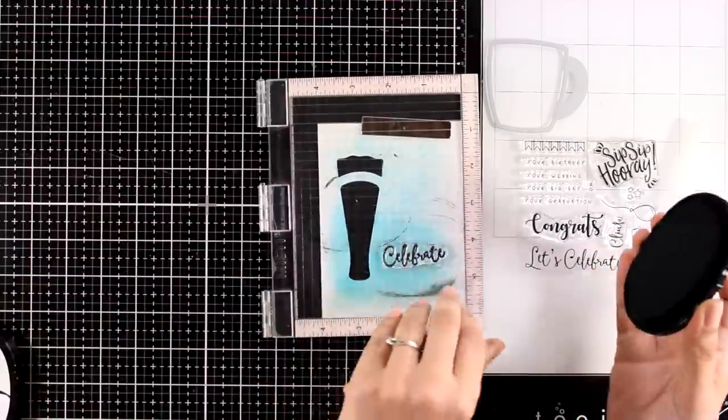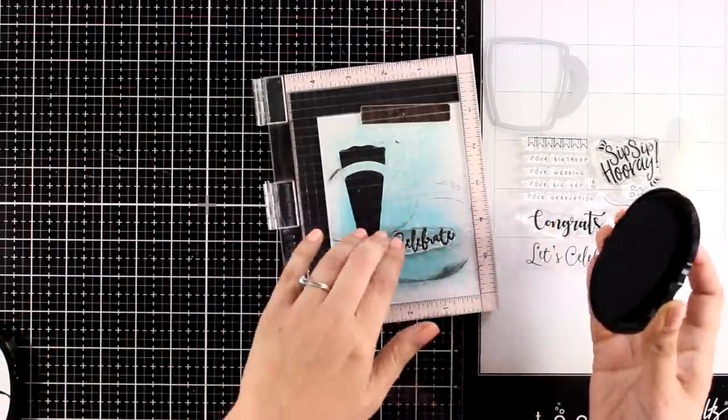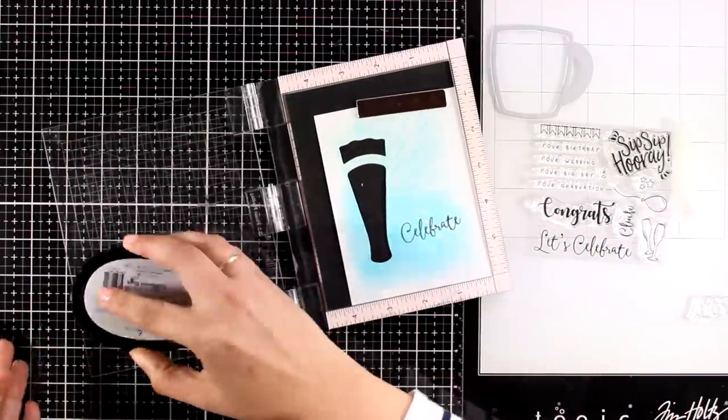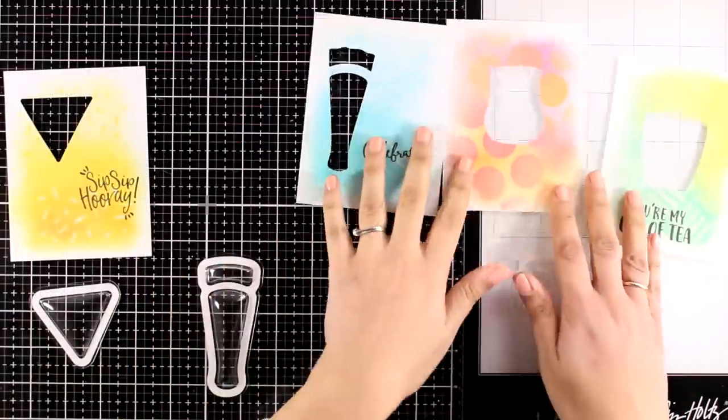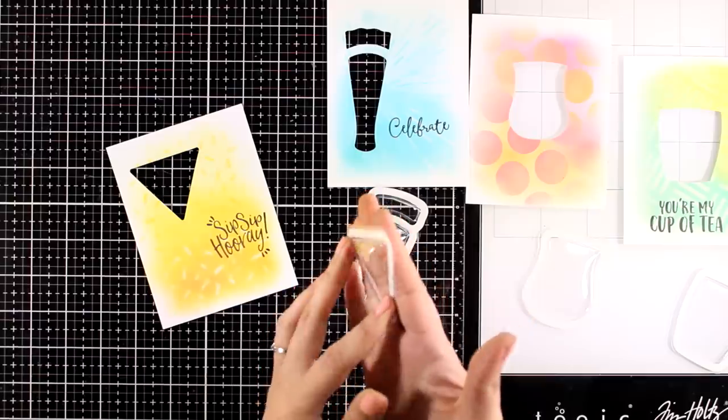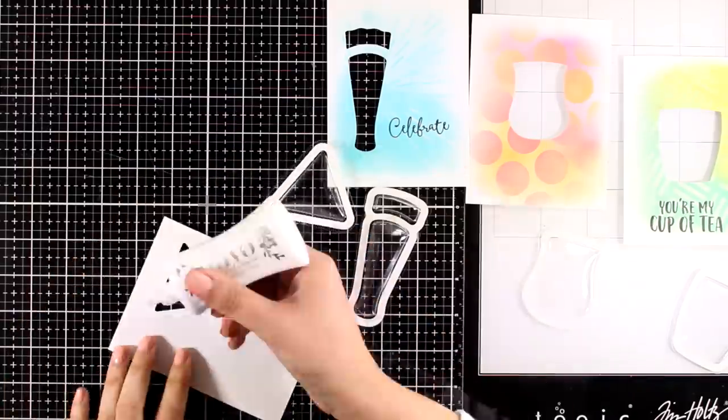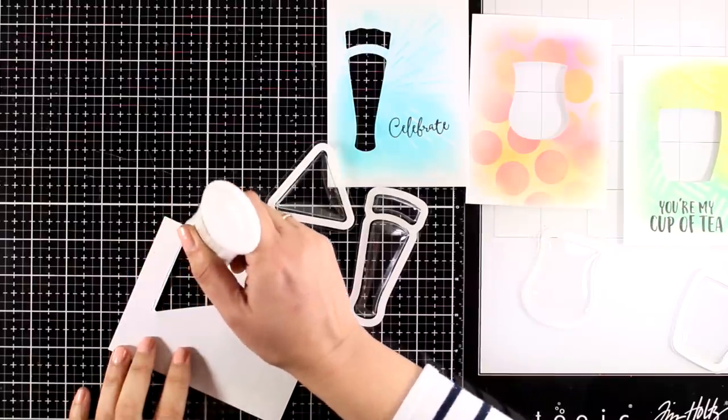This one is called pint glass and I'm going to create a beer glass there. So I went with let's celebrate but I'm not going to use both of these words I just cut it out with scissors. I'm never afraid of cutting out my sentiments with scissors to make them work for my card and I can always put them back together. So for this card I'm going just with the word celebrate and I will later on stamp a secondary sentiment and stick it underneath.